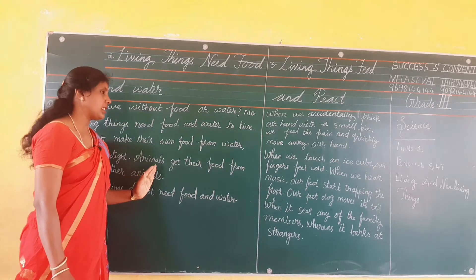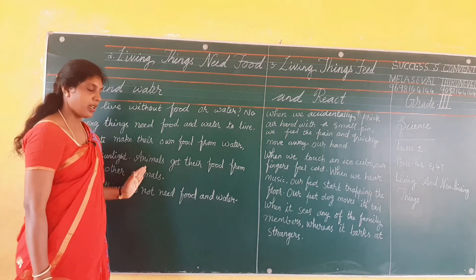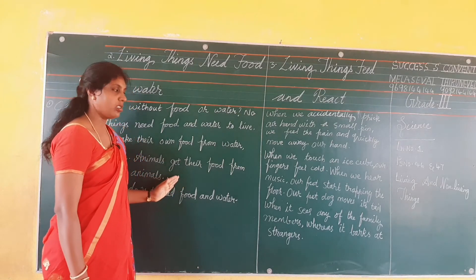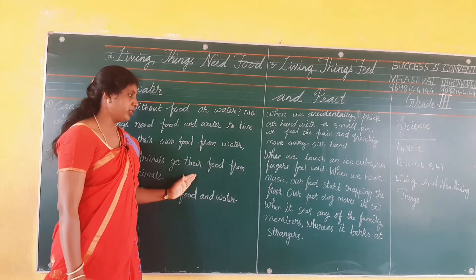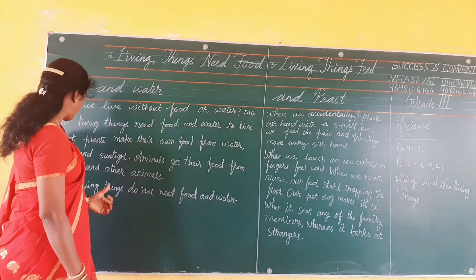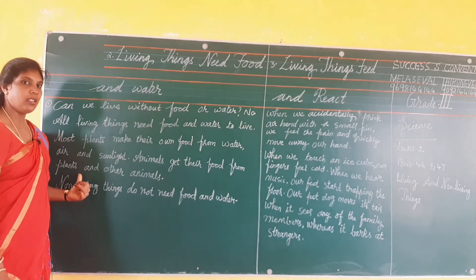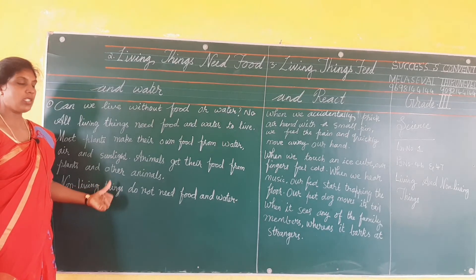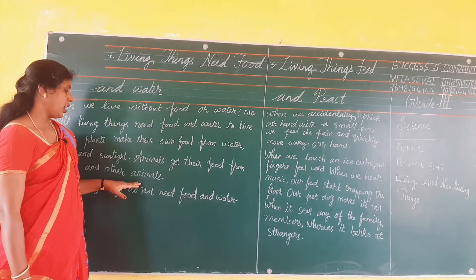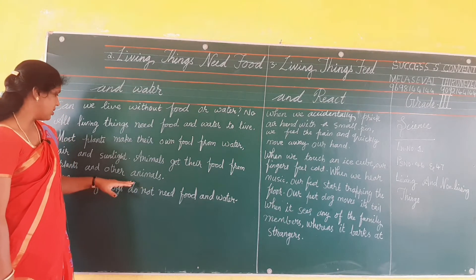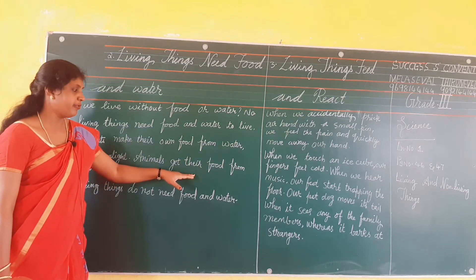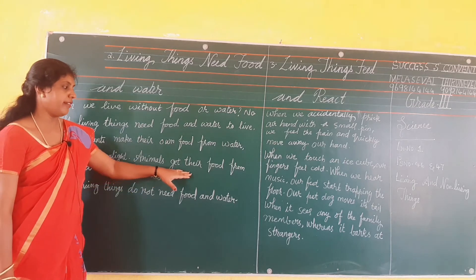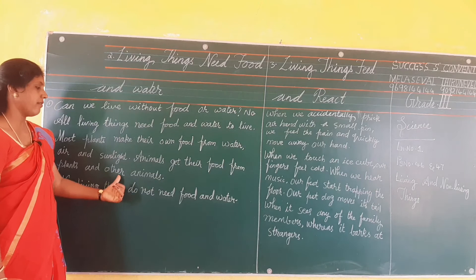Animals. A-N-I-M-A-L-S, Animals. G-E-T, Get. T-H-E-I-R, Their. F-O-O-D, Food. F-R-O-M, From. P-L-A-N-T-S, Plants. A-N-D, And. O-T-H-E-R, Other. A-N-I-M-A-L-S, Animals. Animals get their food from plants and other animals.